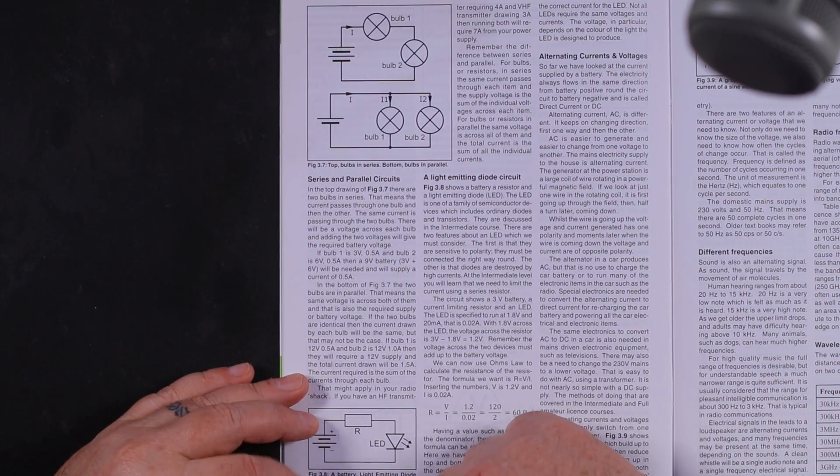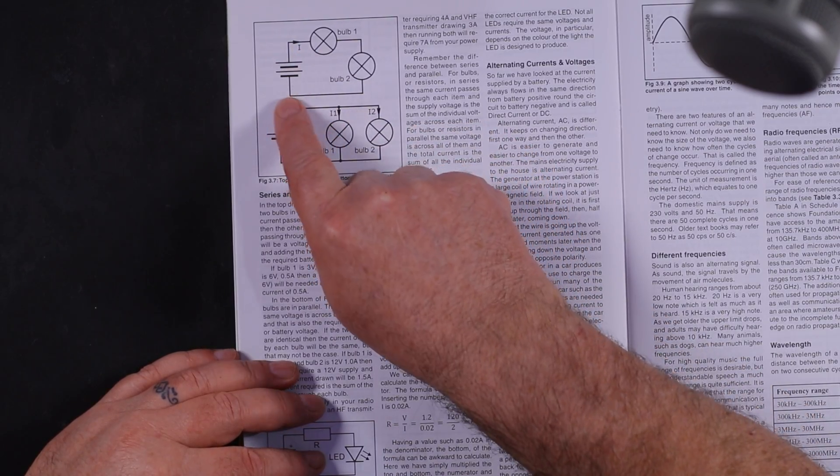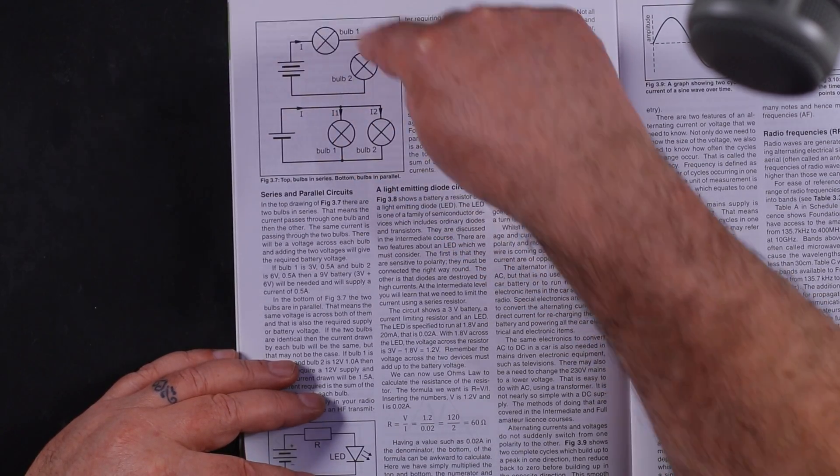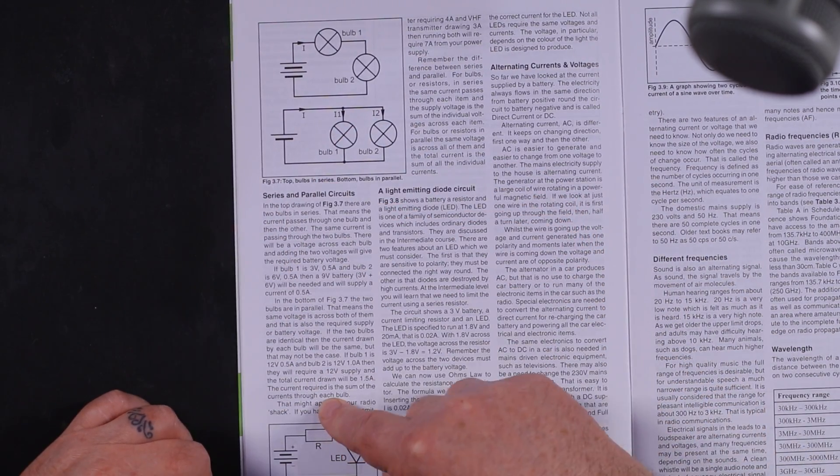Page six talks about series and parallel circuits. An easy way to remember that is if you've got a battery here and a couple of resistors or bulbs, the electricity will be going in series like watching a Netflix series - it's one after the other. And parallel is both together.